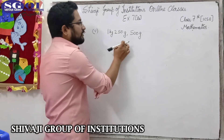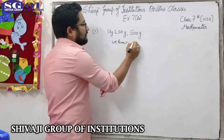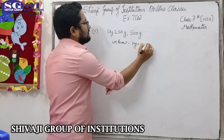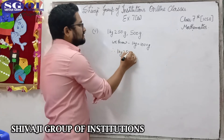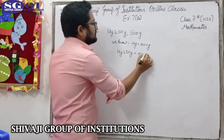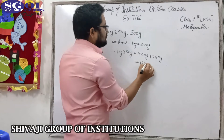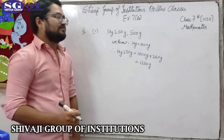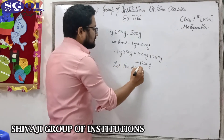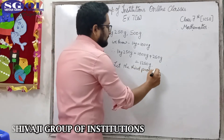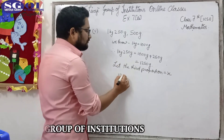We know that 1 kg is equal to 1000 grams. Therefore 1 kg 250 grams equals 1000 grams plus 250 grams, that is 1250 grams. Let the third proportion be equal to x.